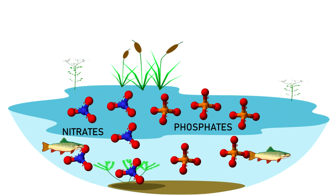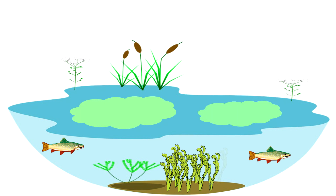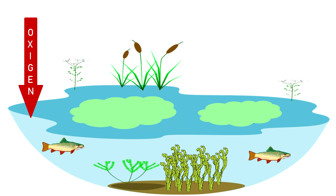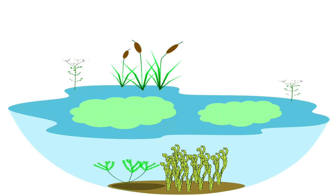The abundance of nitrates and phosphates causes the massive proliferation of algae and phytoplankton, which has some consequences. On one hand, algae consume oxygen, causing the death of aerobic organisms — those that need oxygen to live. This phenomenon is known as hypoxia. On the other hand, the water becomes turbid and it hampers sunlight from reaching the bottom, in such a way that photosynthesis cannot occur and plants die as well.